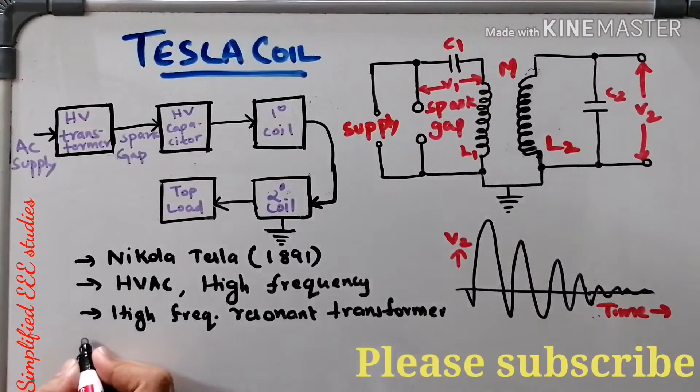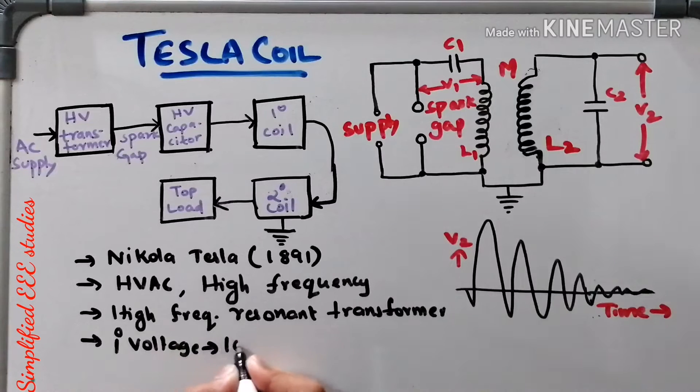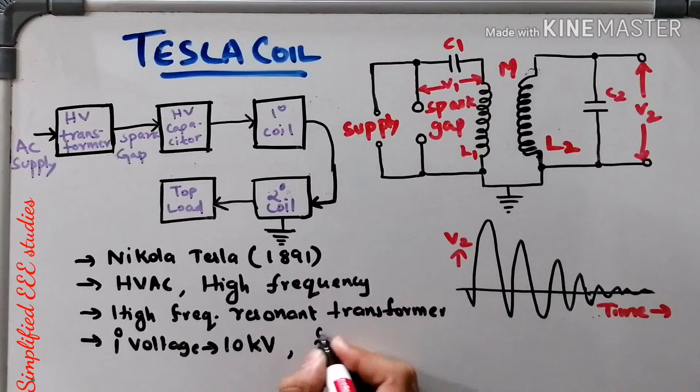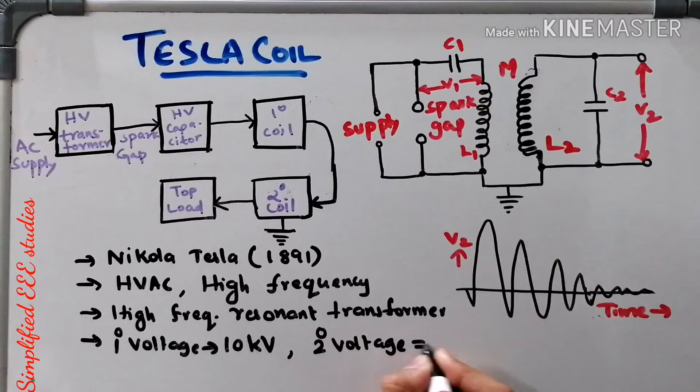Primary voltage, if you look at the primary voltage, will be in the range of 5kV to 10kV. Then if you look at the secondary side, secondary voltage, that is output voltage, it will be approximately 1000kV.